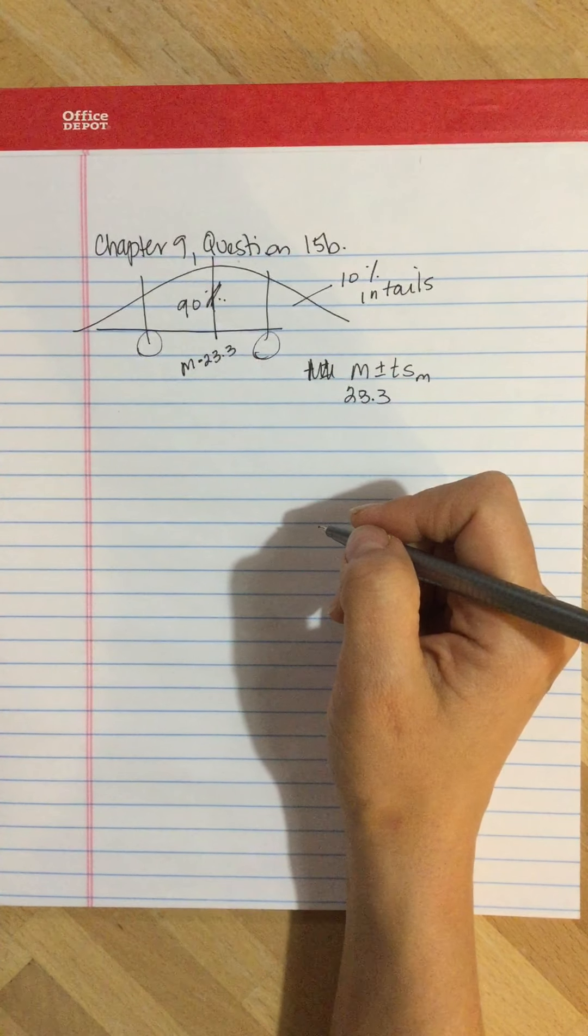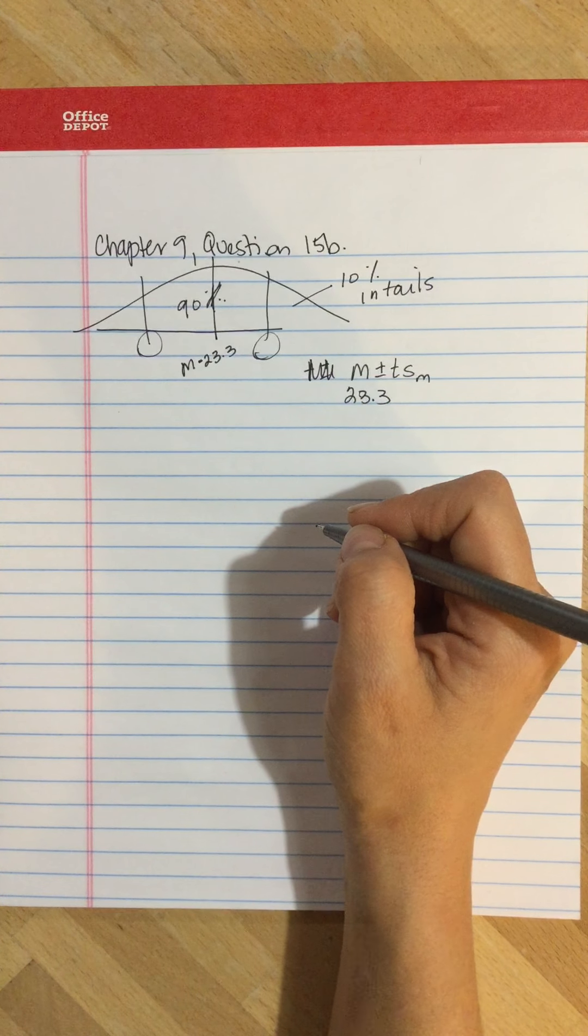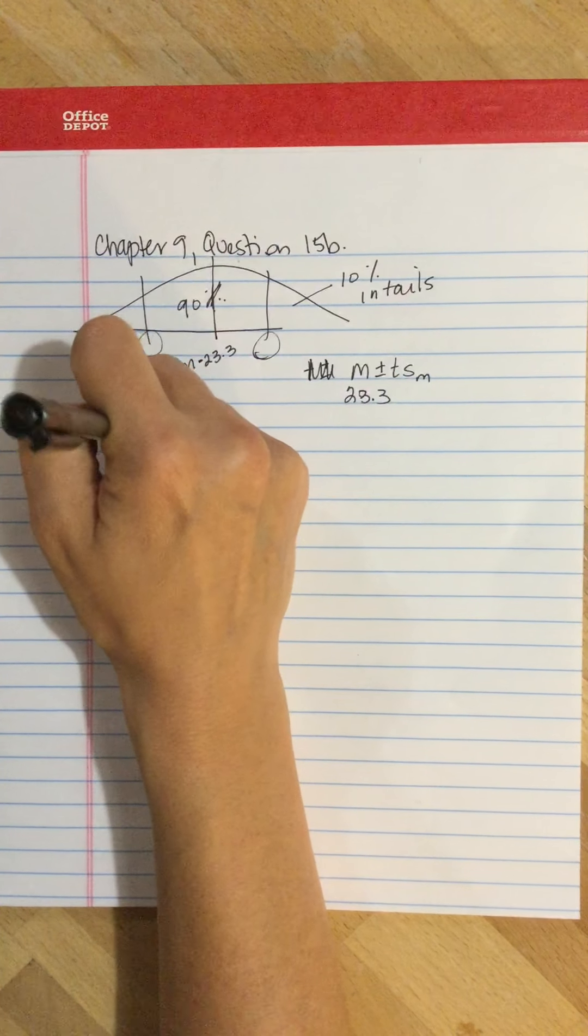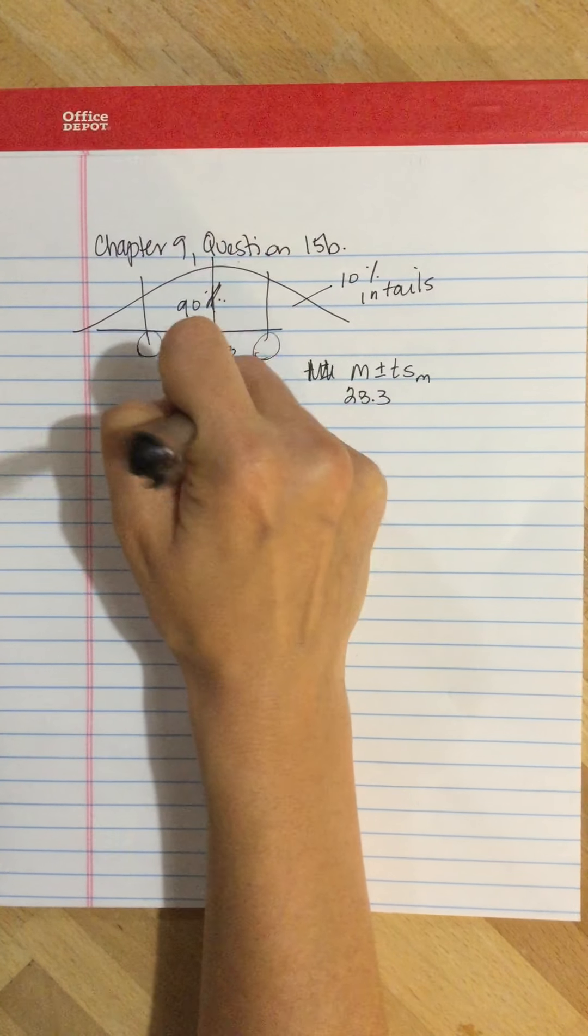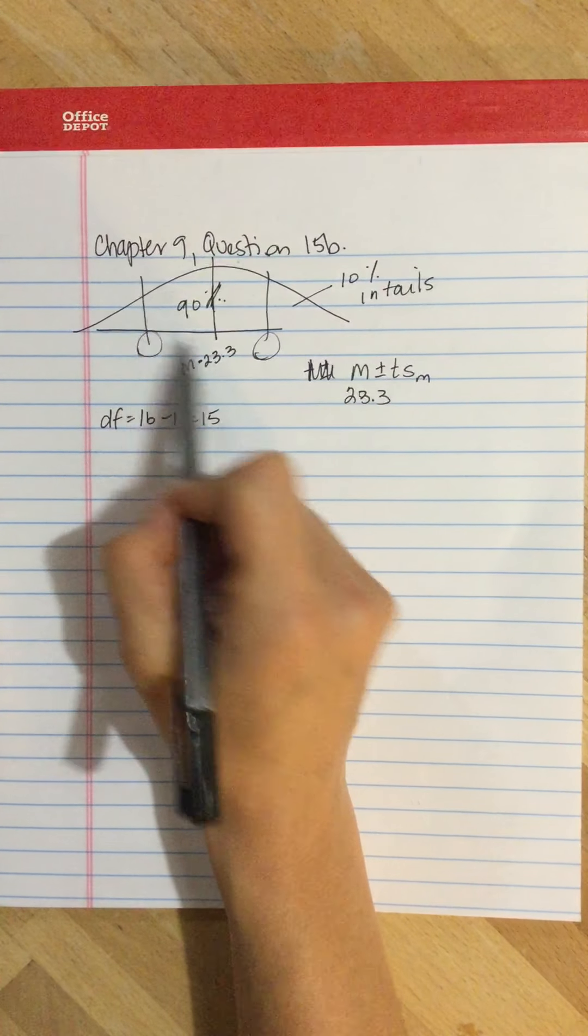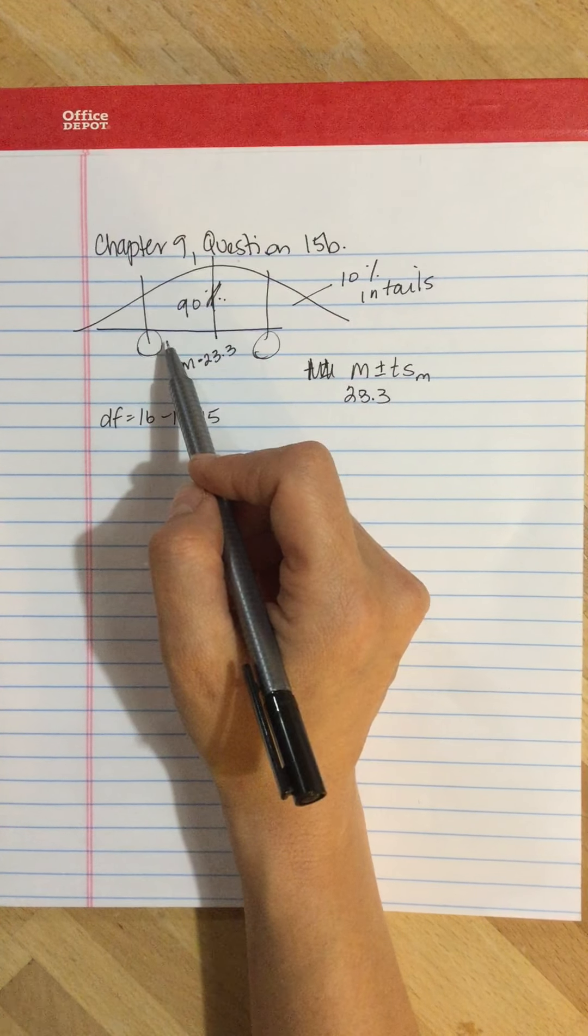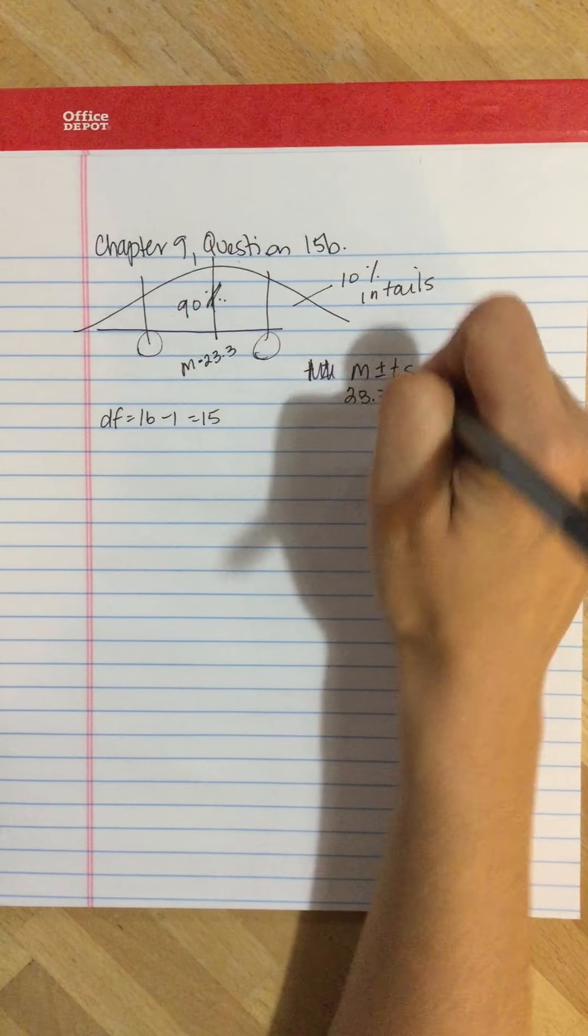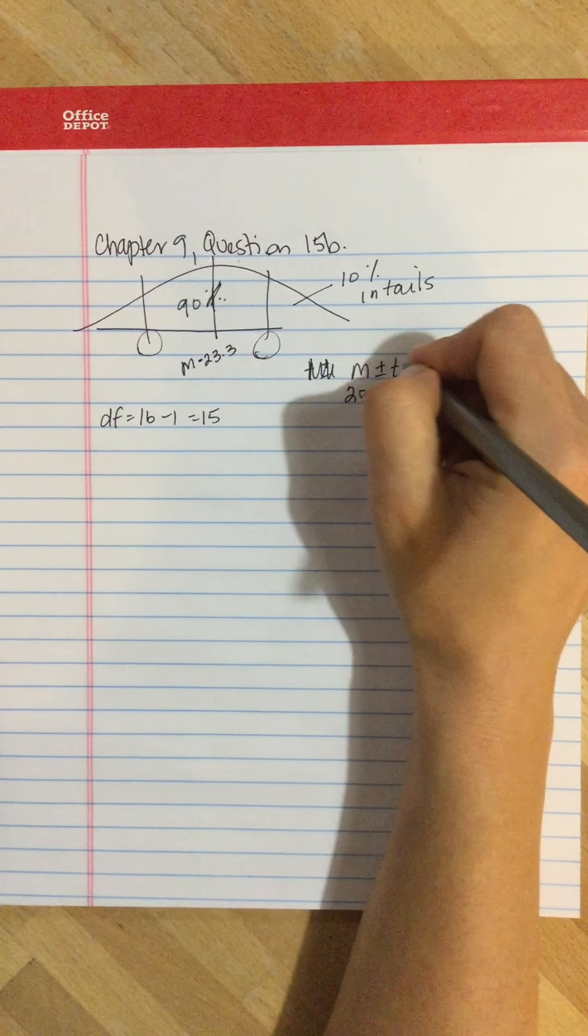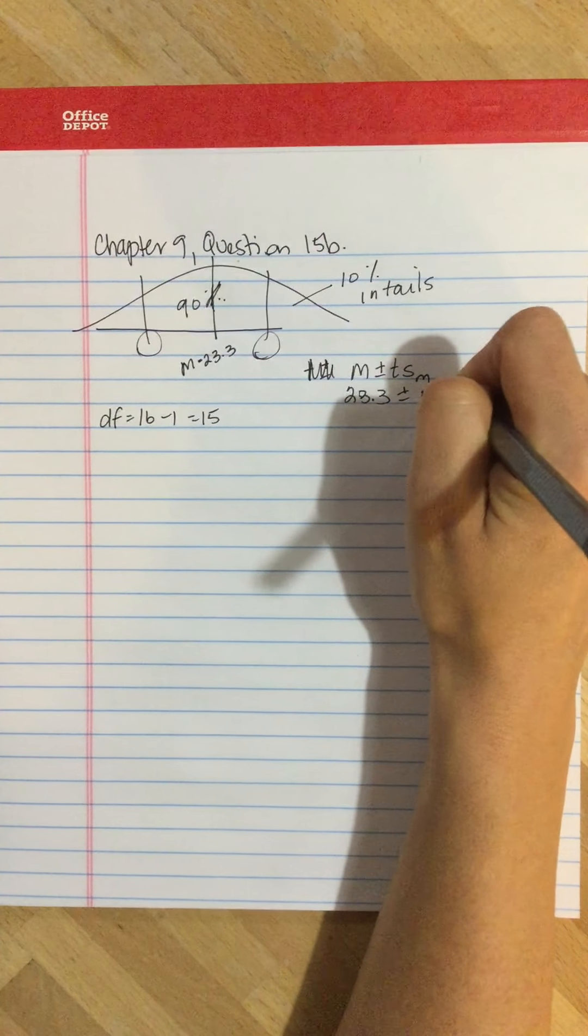If we go to the back of the book with degrees of freedom 16 minus 1 equals 15, we look up the values where there's 90% in the middle and 10% in the two tails combined. That value for t is 1.753.